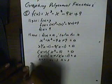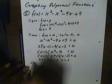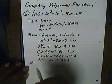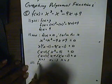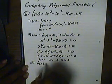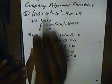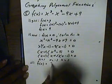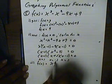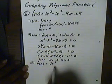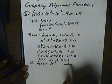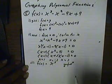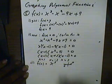Thirdly, we want to look at the end behavior. The end behavior will be based on the first term. The first term is x cubed, so it will be based on a positive x cubed. Positive x cubed means that the right side will go up, whereas the left side will go down.